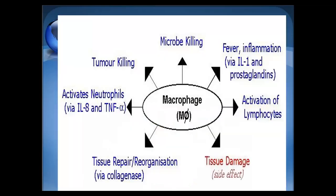Toll-like receptors participate in microbial killing, inflammation (in fish, fever does not occur but other signs of inflammation like tumors, swelling, loss of function, and redness do occur via interleukin-1), activation of B and T lymphocytes, tissue repair and reorganization, activation of neutrophils, and tumor killing activity. A side effect is tissue damage.